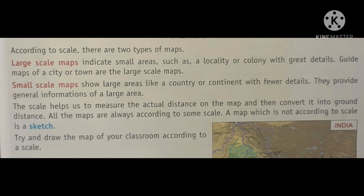According to scale, there are two types of maps. Large scale maps indicate small areas such as a locality or colony with great detail. Guide maps of a city or town are large scale maps. Small scale maps show large areas like a country or continent with fewer details and provide general information. The scale helps us measure the actual distance on the map and convert it into ground distance. All maps are always drawn according to some scale. A map which is not according to scale is a sketch.